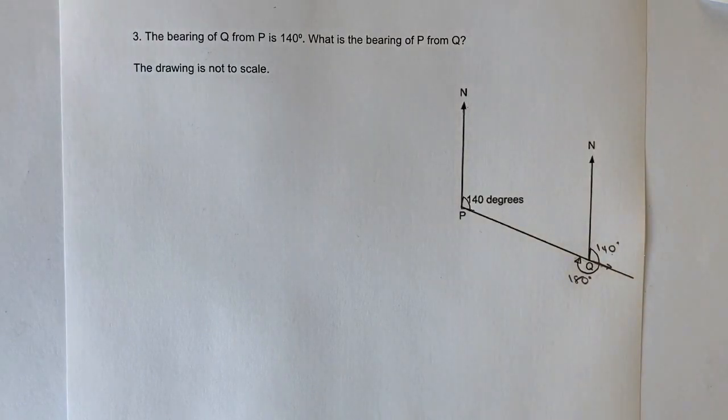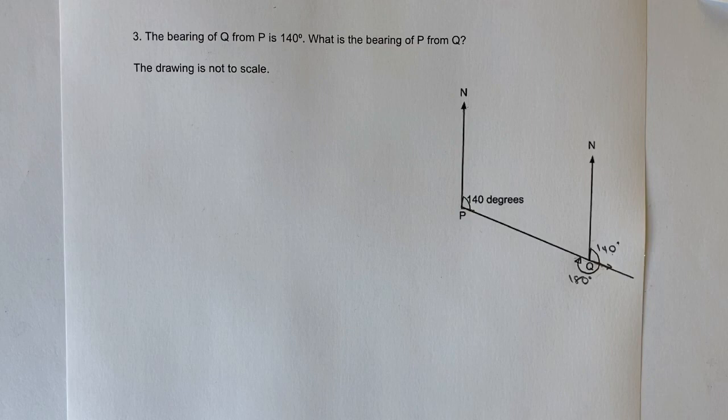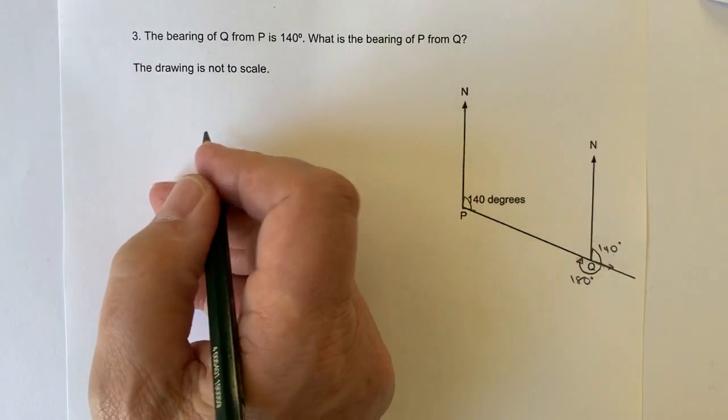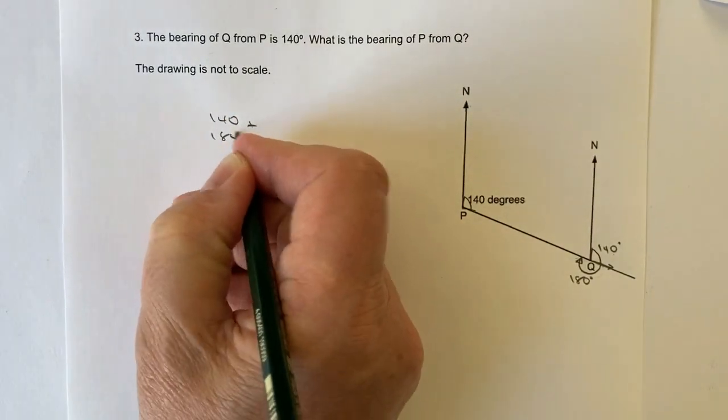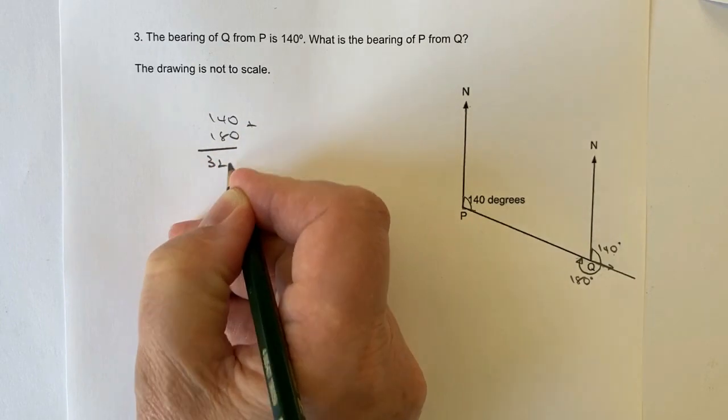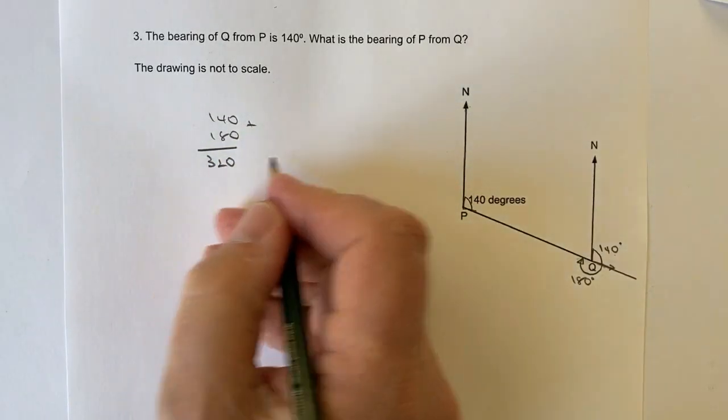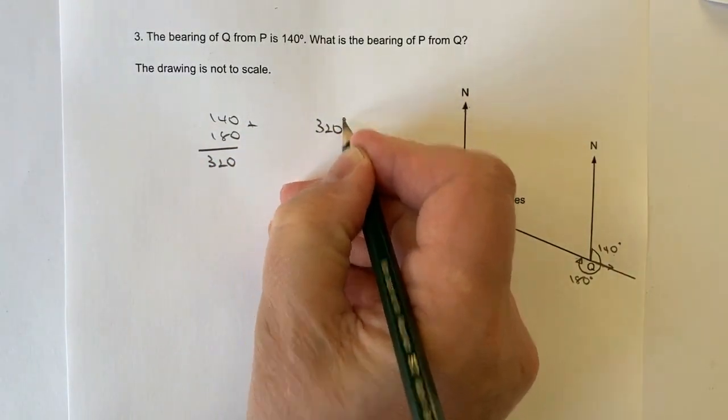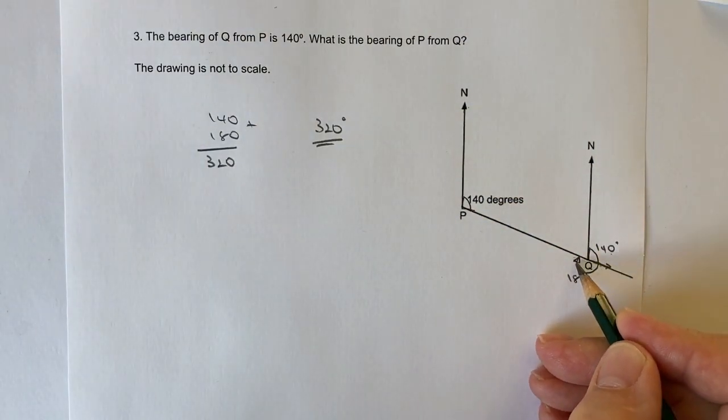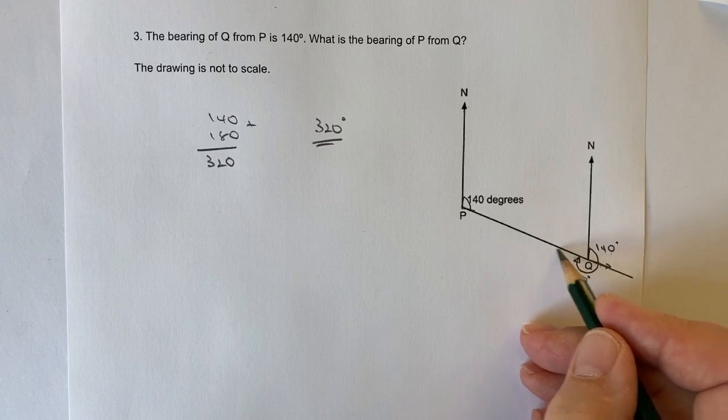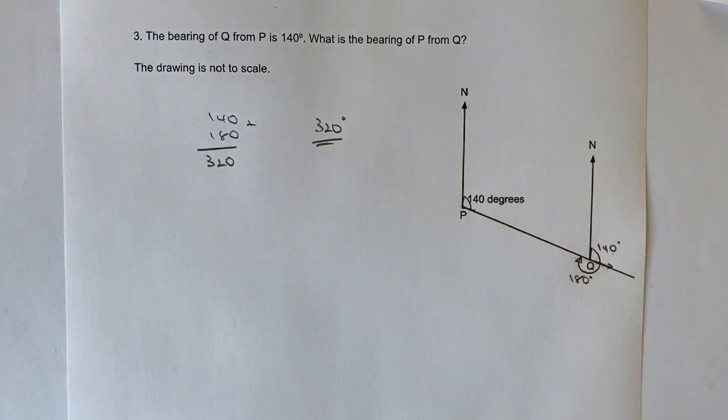So if we want to calculate the bearing of P from Q, what we do is basically add those two together. So we can say that the bearing is going to be 140 plus 180, which is 320. And that's the actual answer to this question. It's 320 degrees all the way around from the north clockwise to this line that points up towards P.